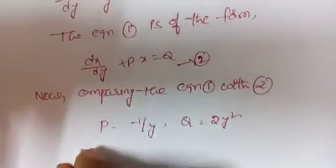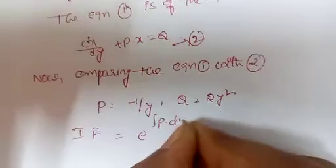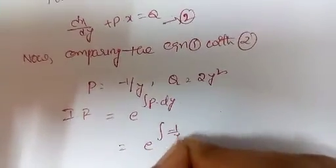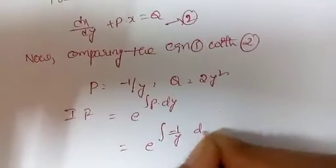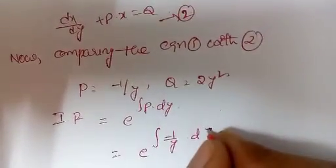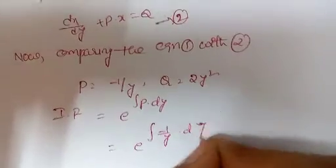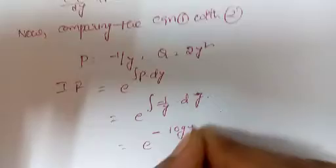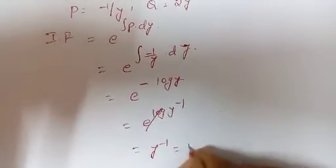The integrating factor equals e^(∫P dy) = e^(∫−1/y dy) = e^(−log y) = e^(log y⁻¹). Since e and log cancel, this gives y⁻¹.